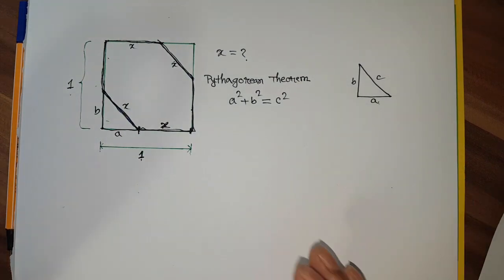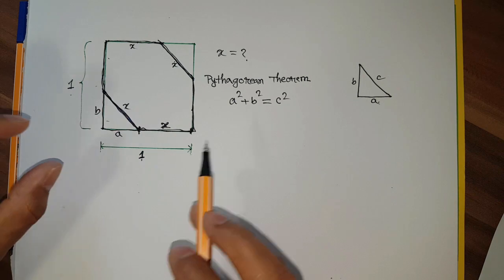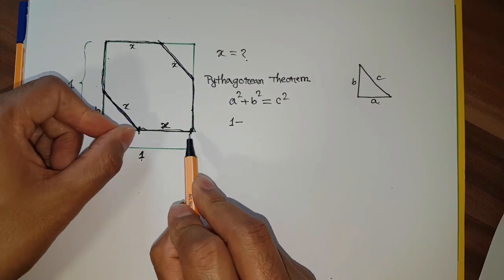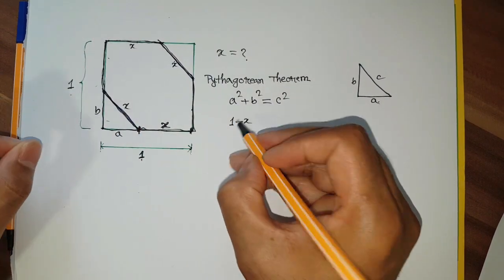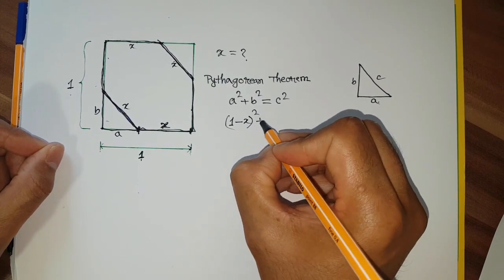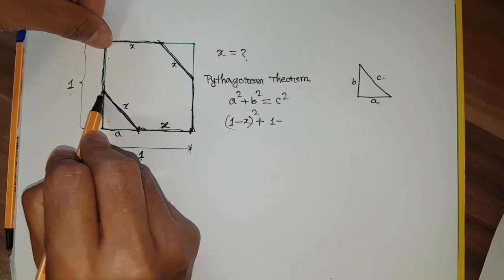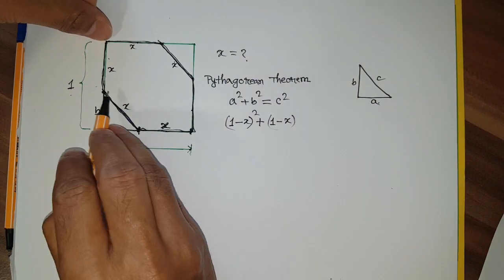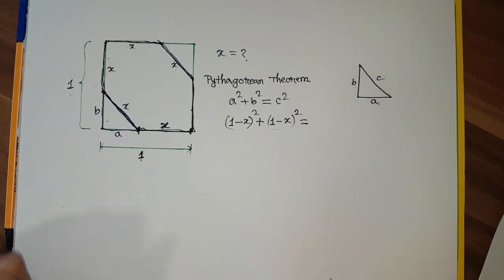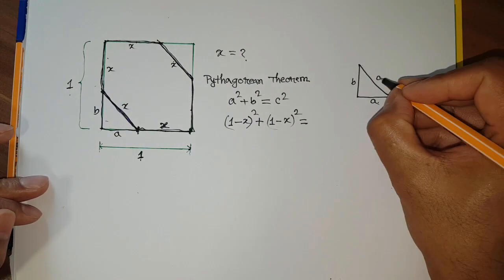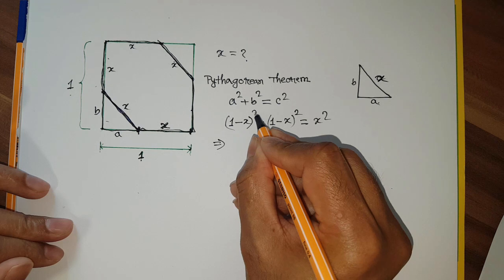This is the right angle triangle and we can apply the Pythagorean theorem, which says A² + B² = C². This is the starting of our mathematical solution. What is A? A is this total length minus that length - we know the total length - so A equals one minus X. And B: the total length is one, minus this part which is X, so B equals one minus X. And C equals X.